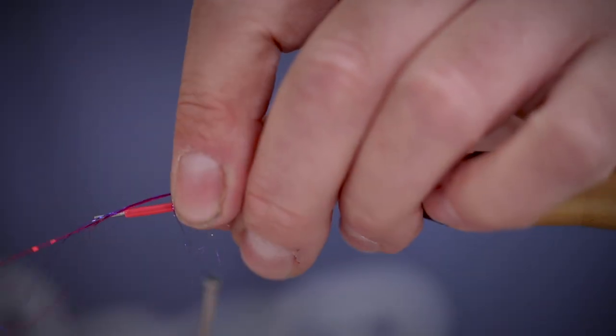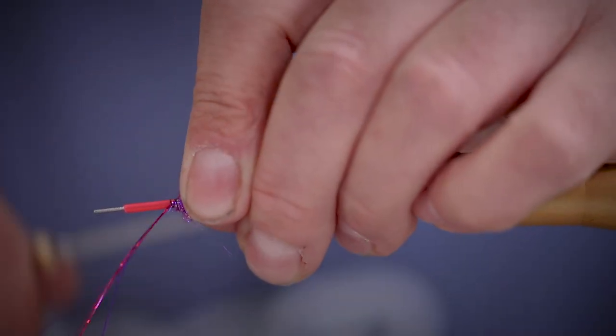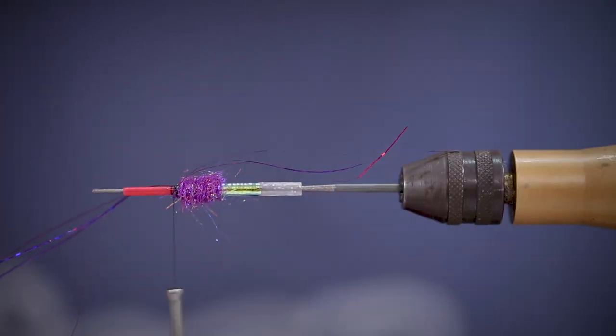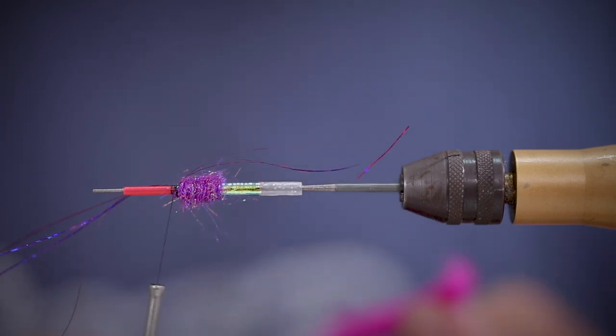Next is some pink, purple and blue flash holographic. This is going to go underneath our zonka wing.